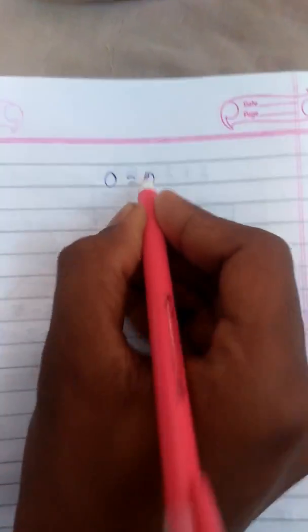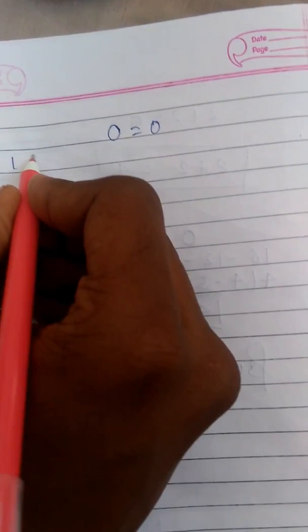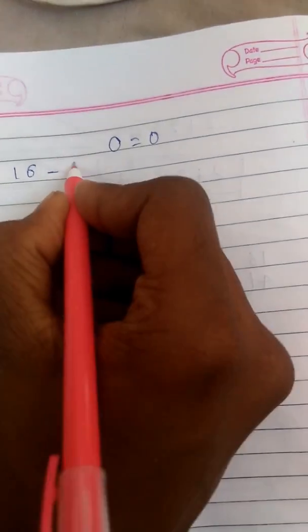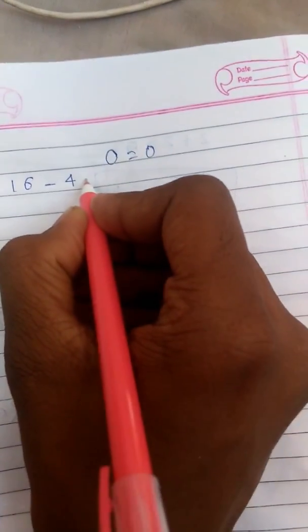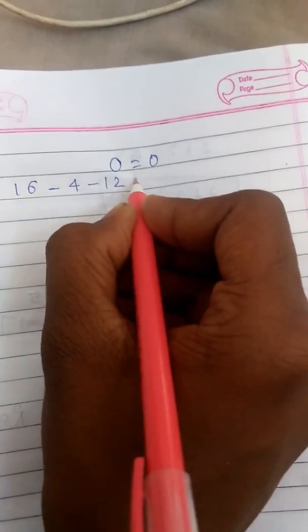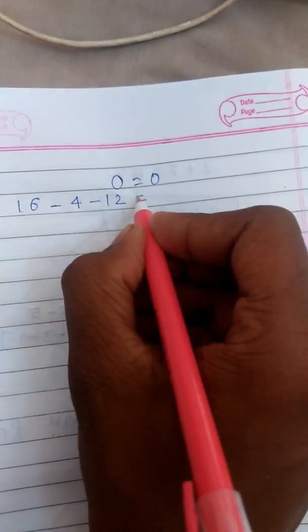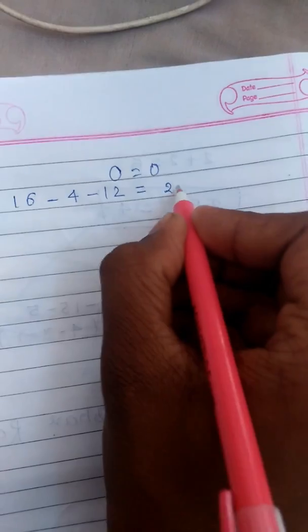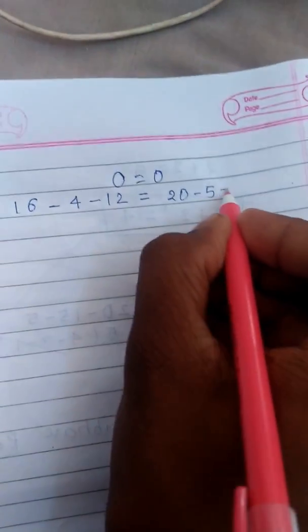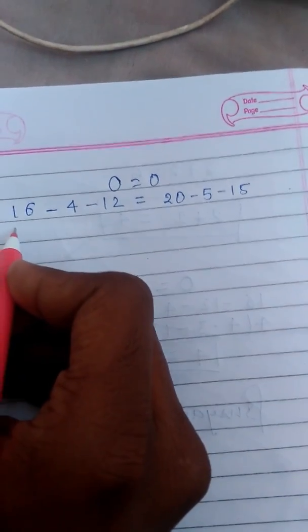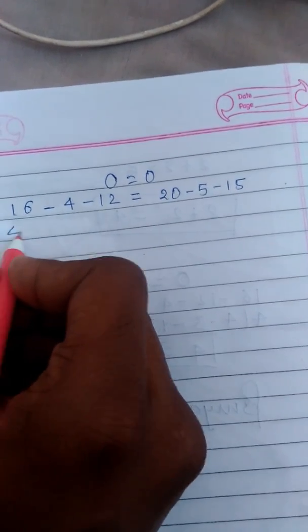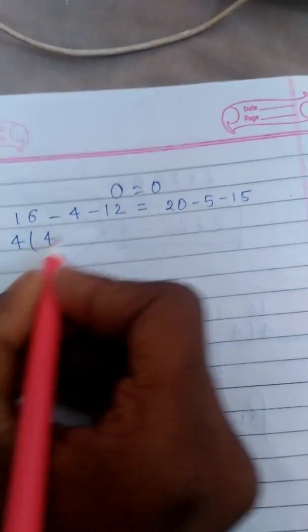Now see, we know that 0 equals 0. We can write 0 as 16 minus 4 minus 12, and also 0 as 20 minus 5 minus 15. We can take common from here: 4...